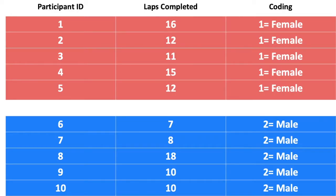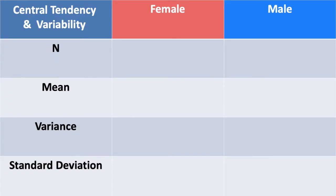Let's imagine we have data for 10 participants — five females and five males. Participant IDs one through five represent our females. Participant one completed 16 laps, participant two 12 laps, participant three 11 laps, and so on. Participants six through 10 represent our male participants. Participant six completed 7 laps, participant seven 8 laps, and so forth. This is the data for this particular scenario.